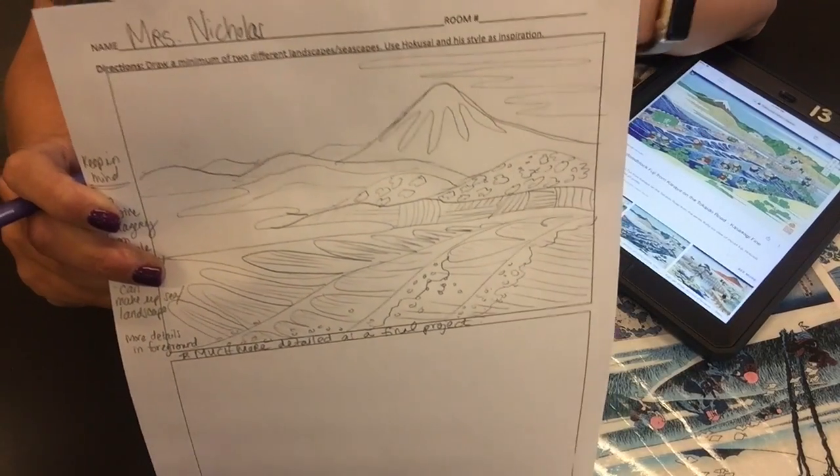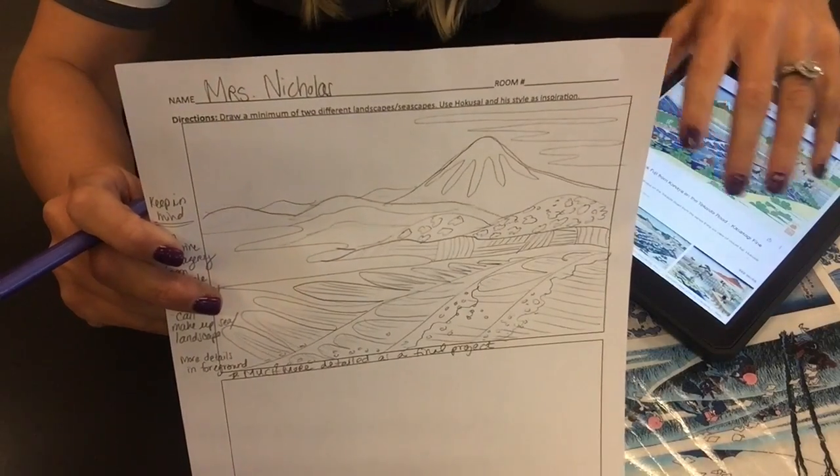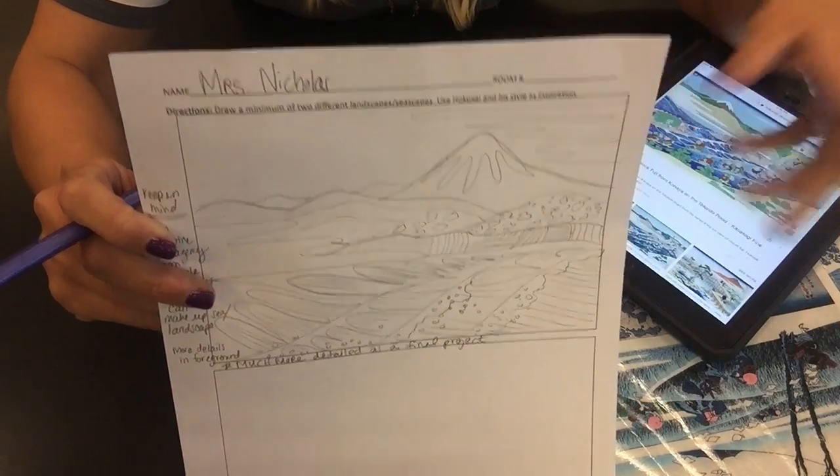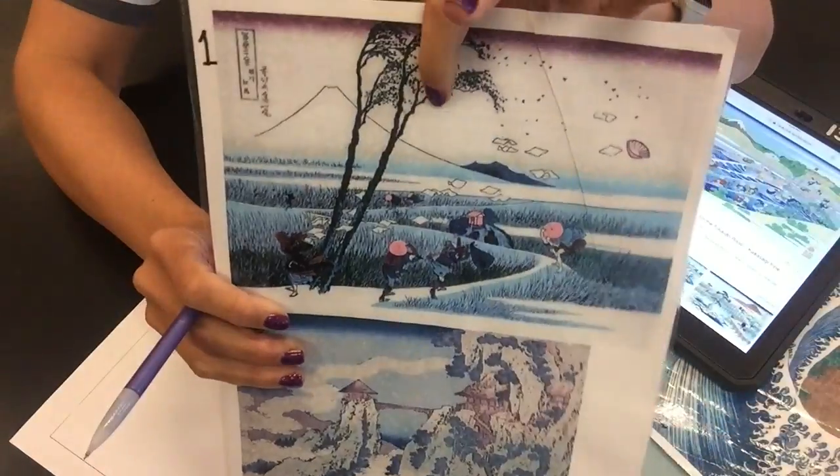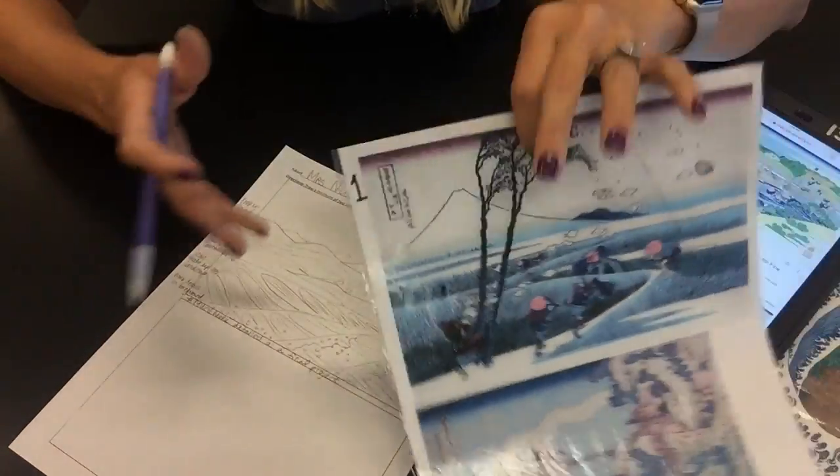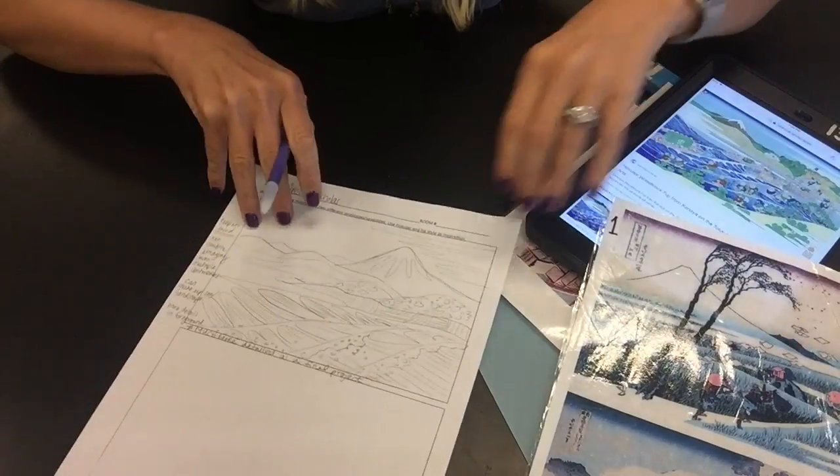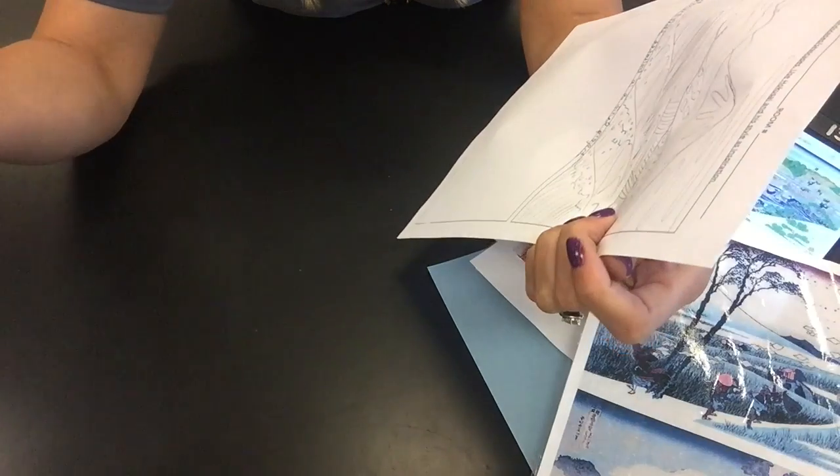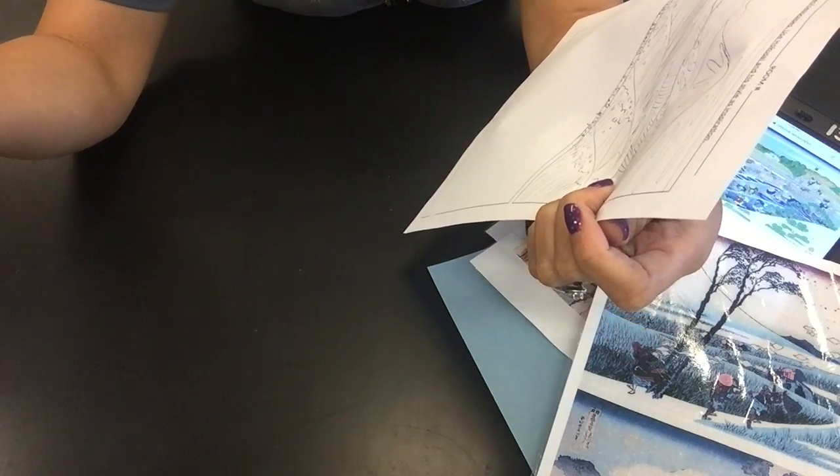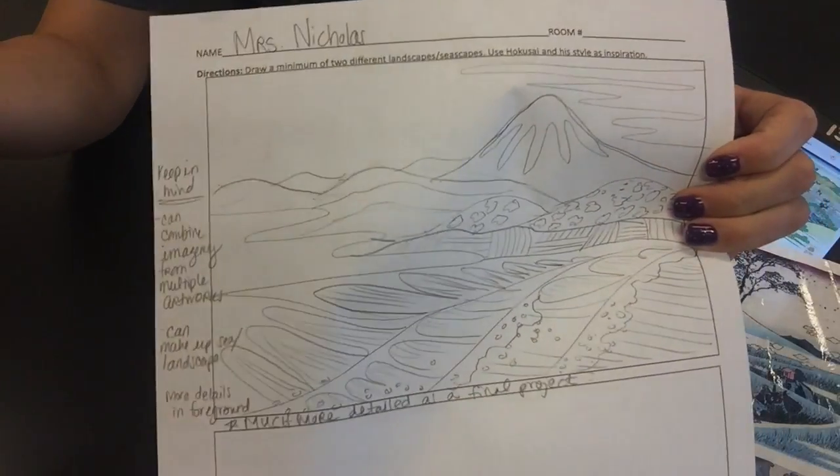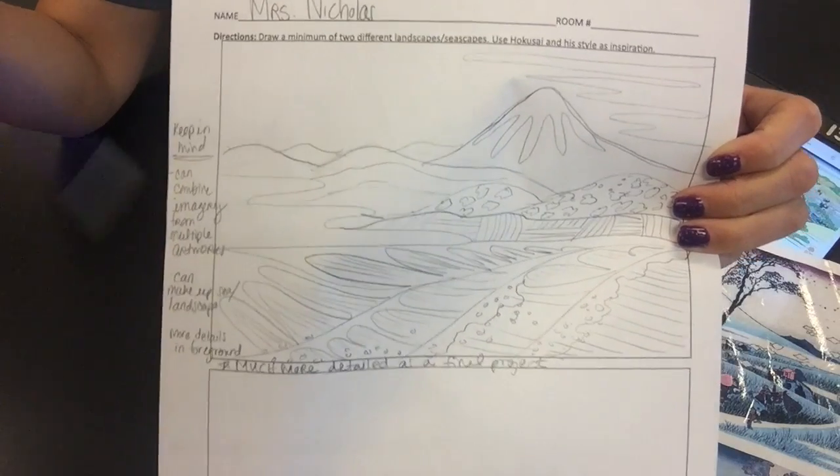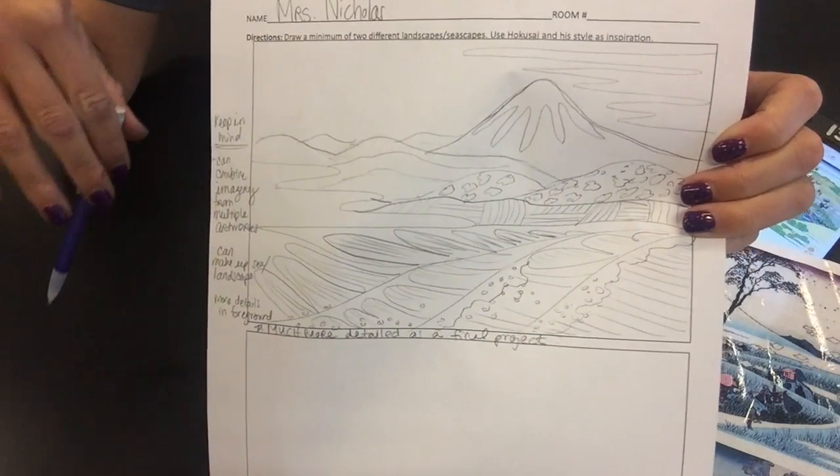You can also take a couple of different ideas. Let's say you really want to have the great wave, but you also want to have some trees like this one in there. You can figure out a way to combine multiple things from different artworks into one on yours if you would like to do that. And you can also feel free to completely make up your own. We want to try to stay in that style of Hokusai.